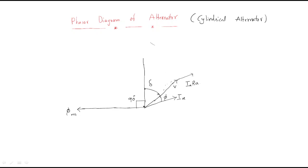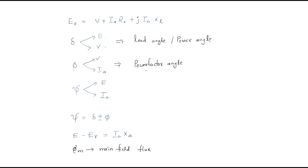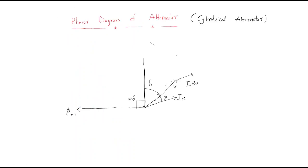To find the voltage, we take both drops: ia·Ra plus ia·Xs. Adding ia·Xs gives the reactance voltage. Then we add ia·Xl at 90 degrees. The combination of terminal voltage, the drop across armature resistance, and the drop across leakage reactance gives the Er voltage.